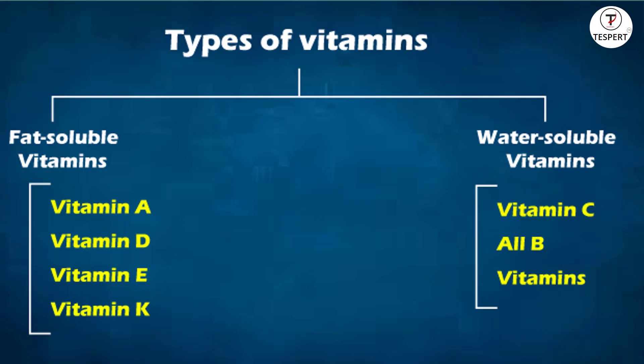What are the types of vitamins? This is very important. There are two types: one is fat soluble vitamins, and the second is water soluble vitamins. Fat soluble vitamins are classified into vitamin A, vitamin D, vitamin E, and vitamin K. This is very important because examiners will frame questions from this. Remember, there are four categories in fat soluble vitamins: vitamin A, vitamin D, vitamin E, and vitamin K.